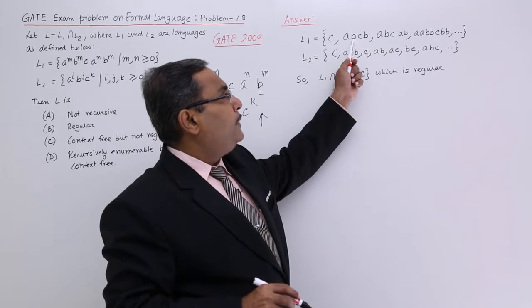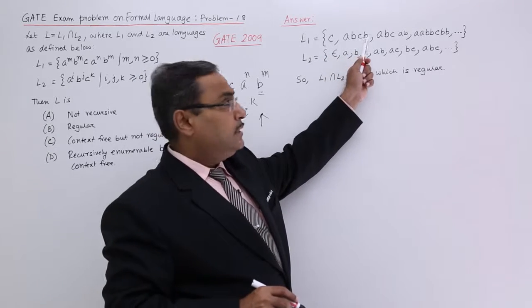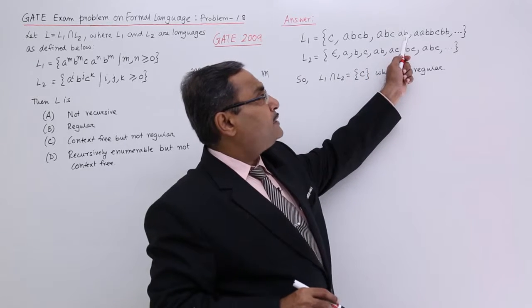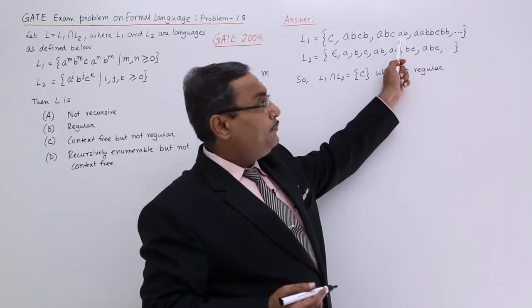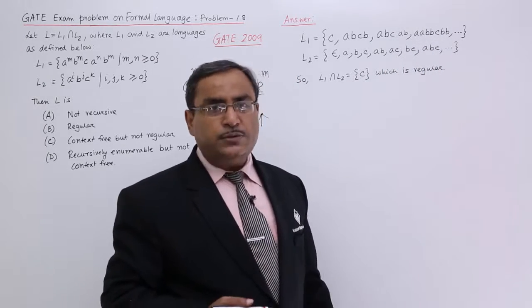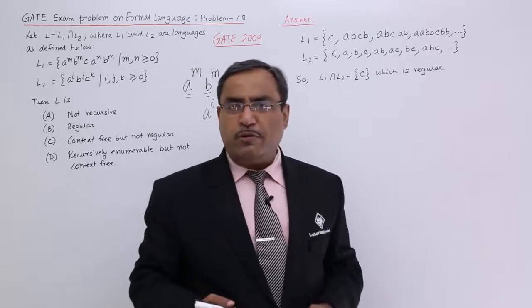So now, if there is 1 A, 1 B, then 1 B must be there after C. If there is 1 A, 1 B before C, then there will be 1 B after C and 1 A has come. There are 2 A's, 2 B's, so after C there must be 2 B's. In this way, I have written some of the strings.